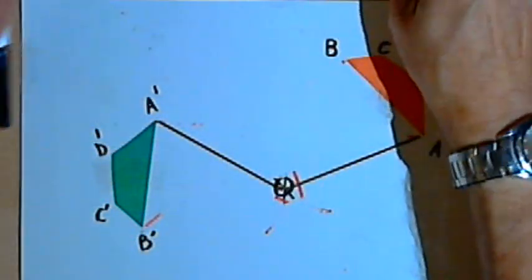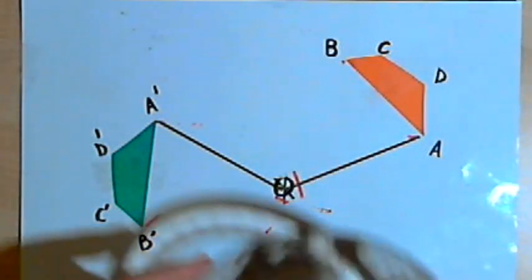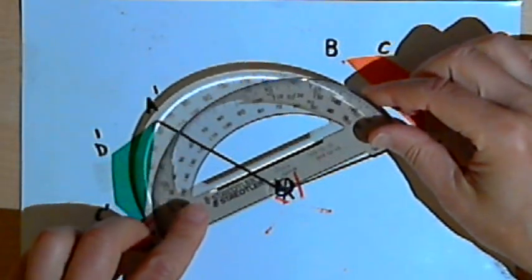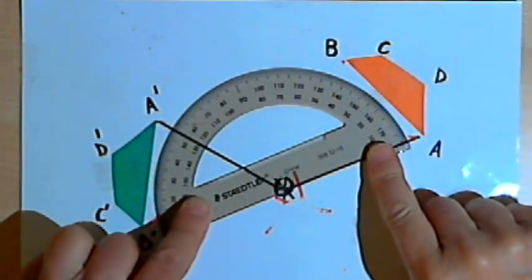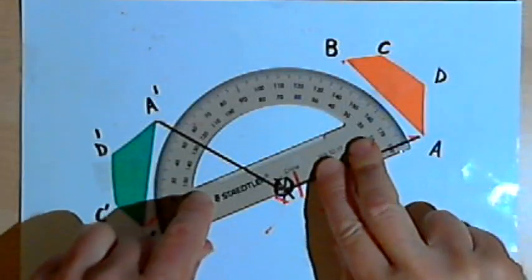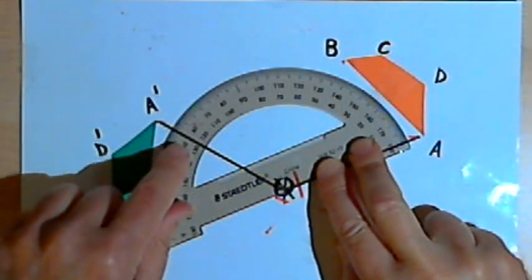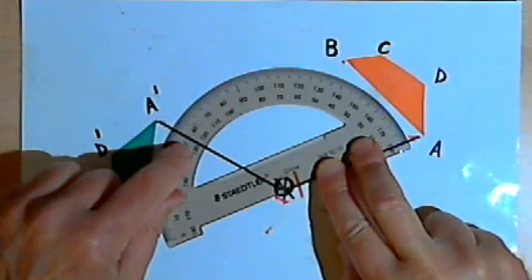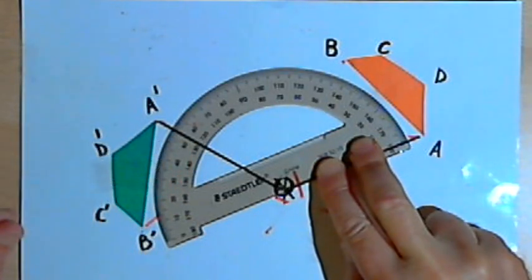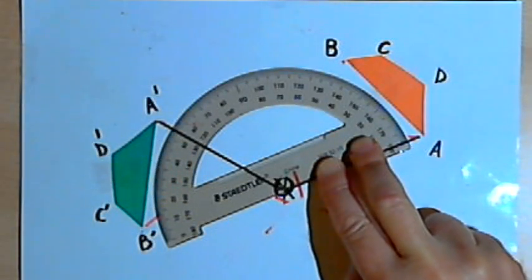So to find the angle of rotation, all I want to do is take a protractor and measure the angle. So the angle I get looks like 130 degrees.